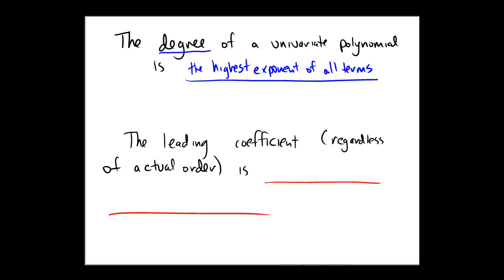The leading coefficient, regardless of actual order of the terms in the polynomial, is the coefficient of the highest degree term. Again here, the order is irrelevant to the calculation or to the solution of the leading coefficient.